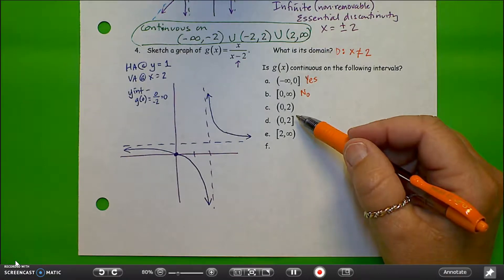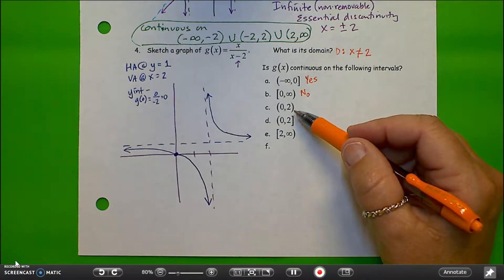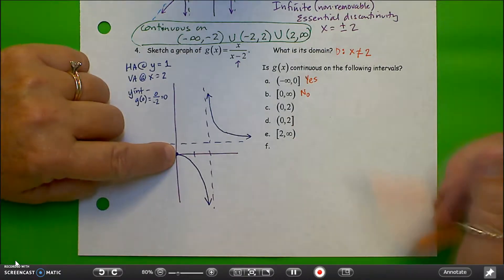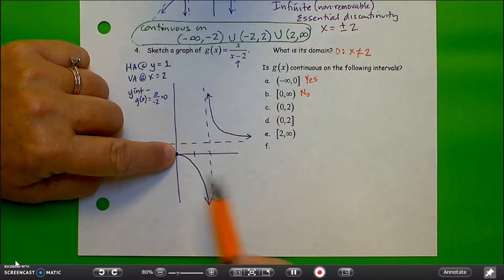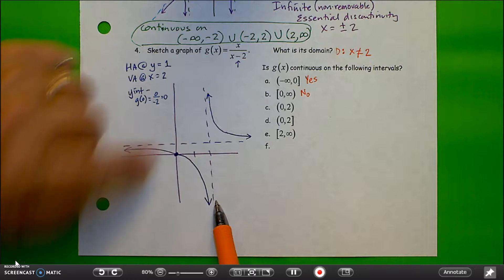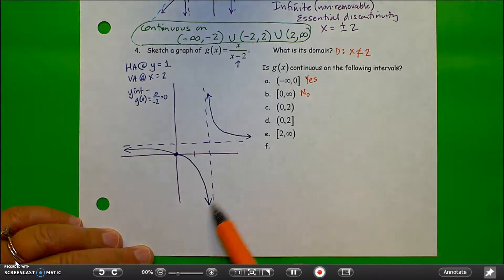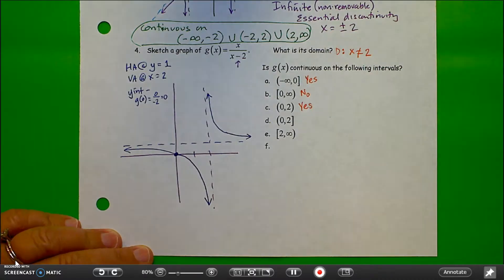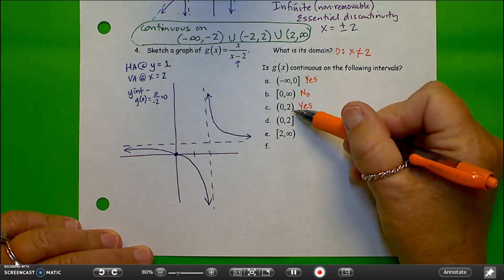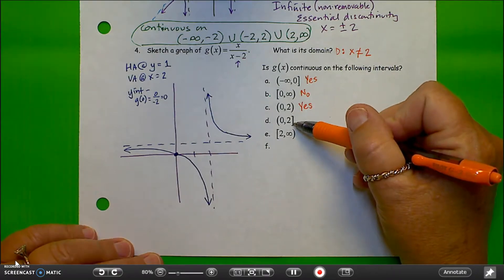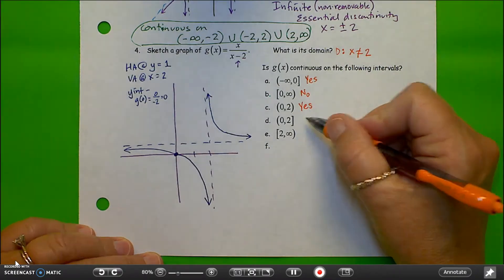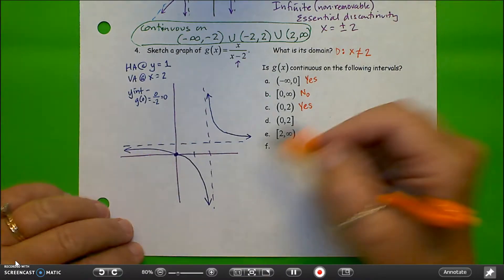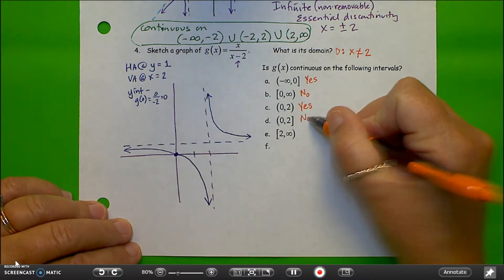Part C: the interval from 0 to 2, not inclusive. From 0 to 2, not including those values, we have a continuous function. Up until we get to 2 but not including 2, it's going to negative infinity, so yes it is continuous on those values. Part D now includes 2, and so we have a discontinuity — it is not continuous because 2 is the location of our asymptote.